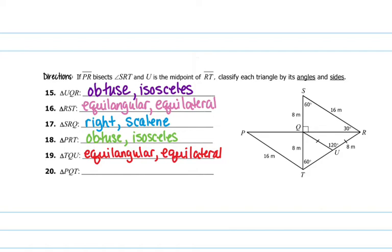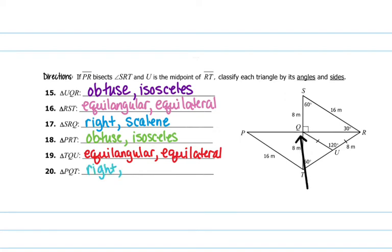And then PQT is this triangle right here. We have a right angle because of vertical angles — so this vertical angle would also be a right angle. And then there are no sides that are the same, so it's scalene.